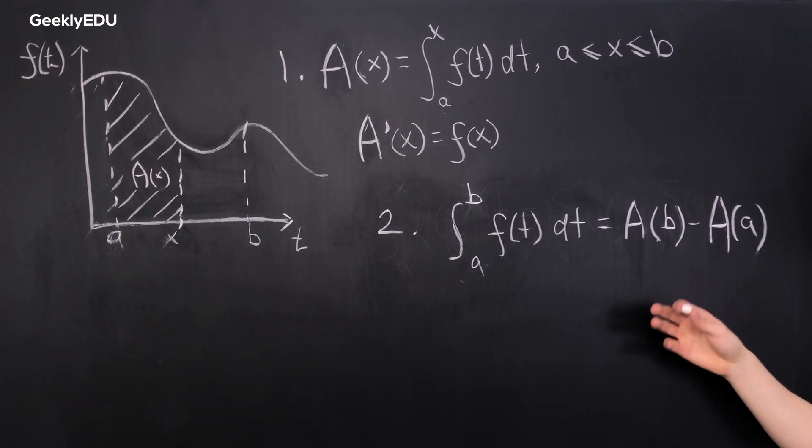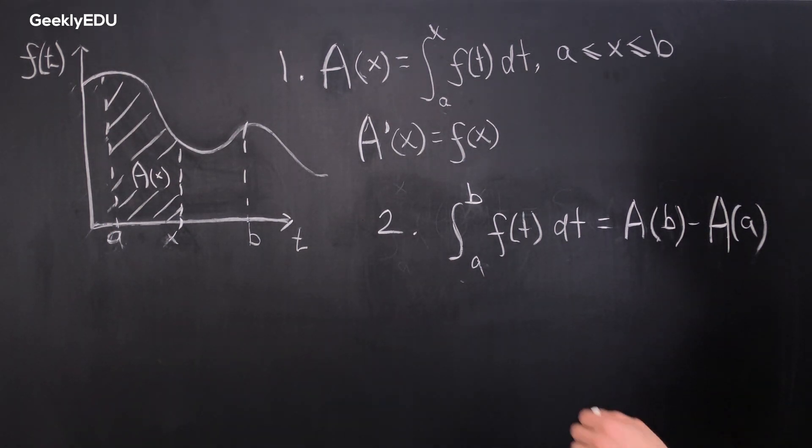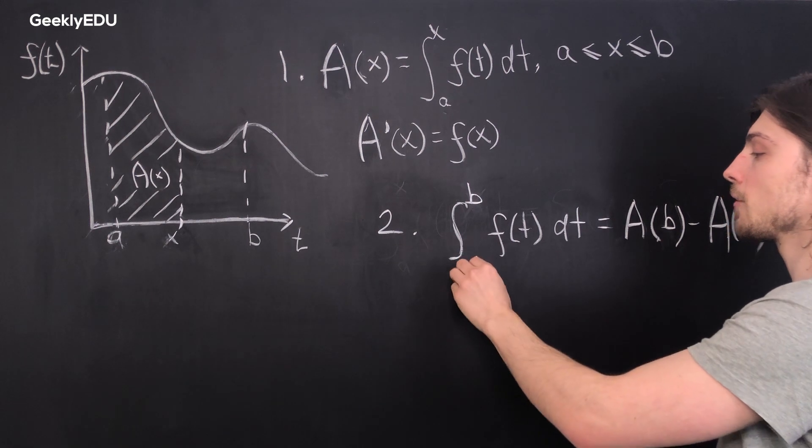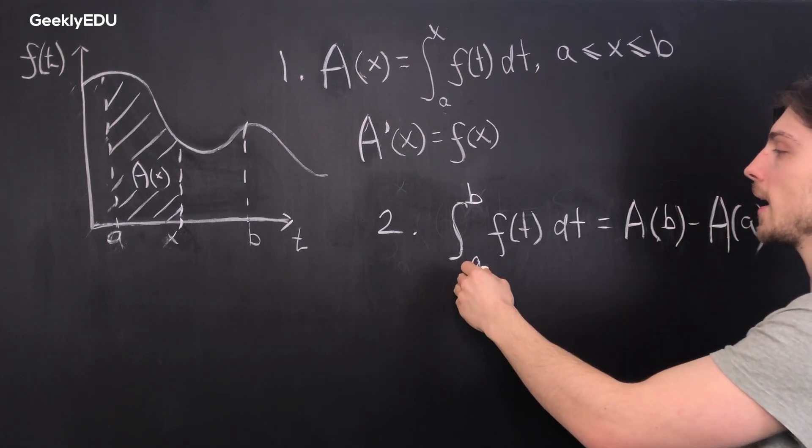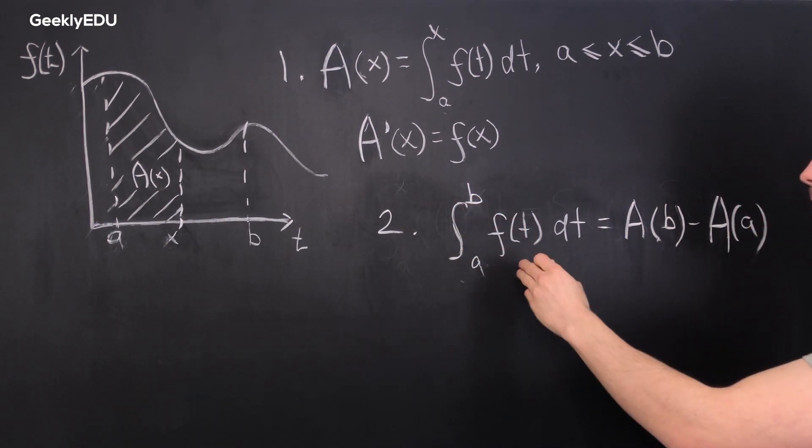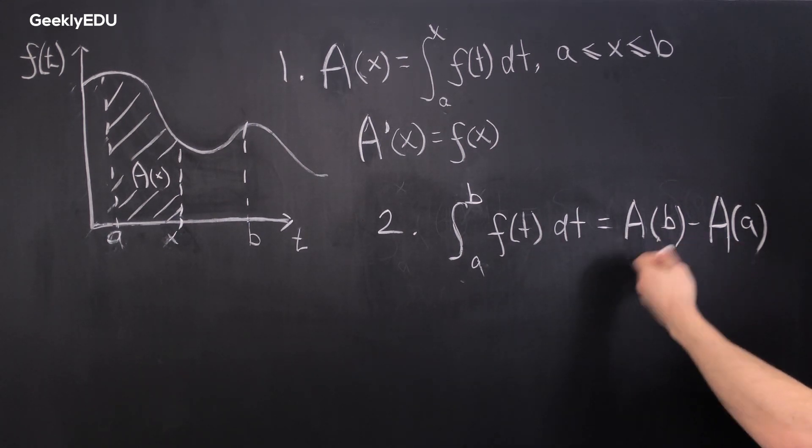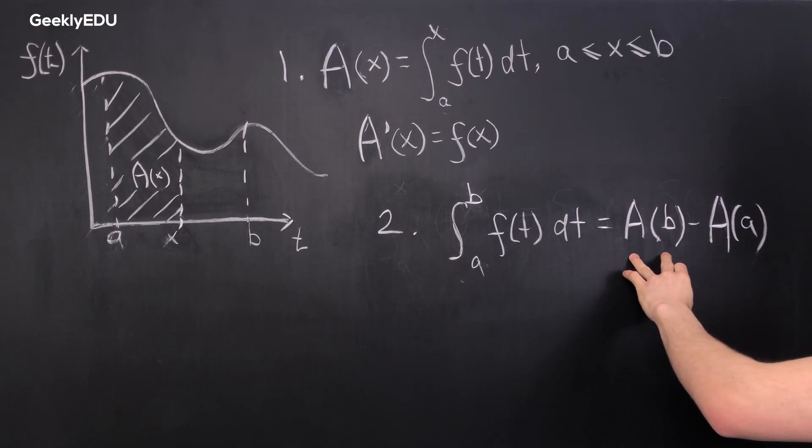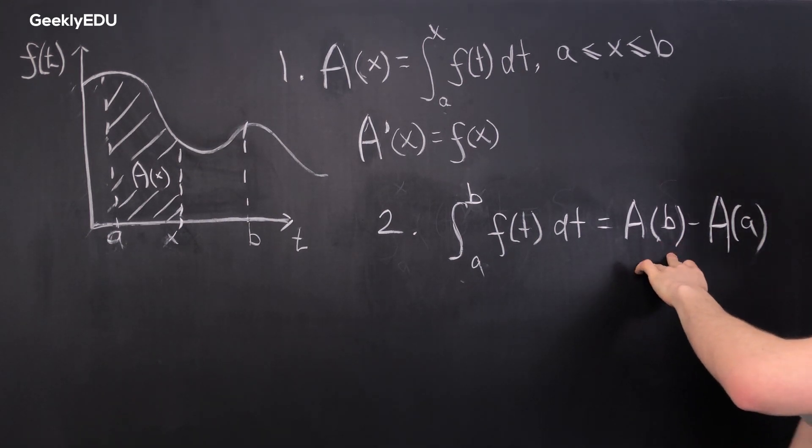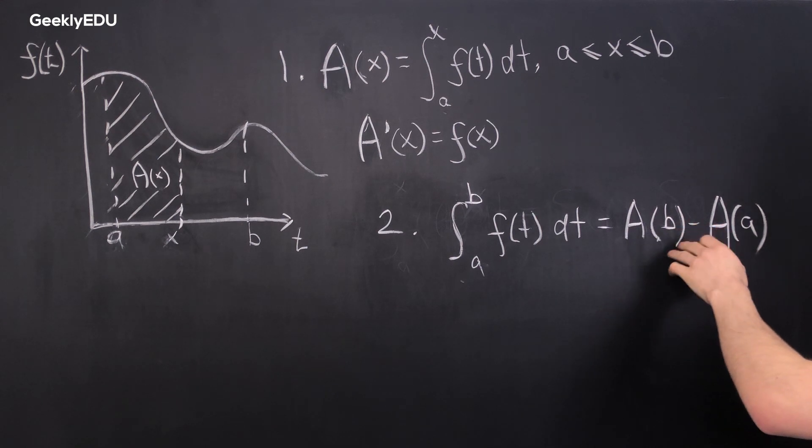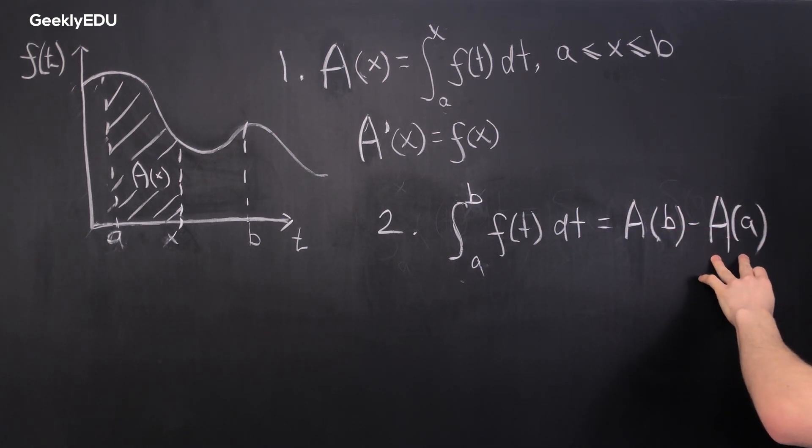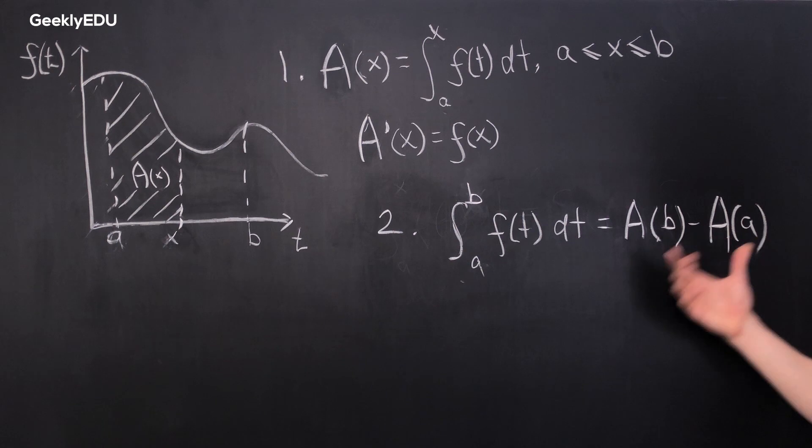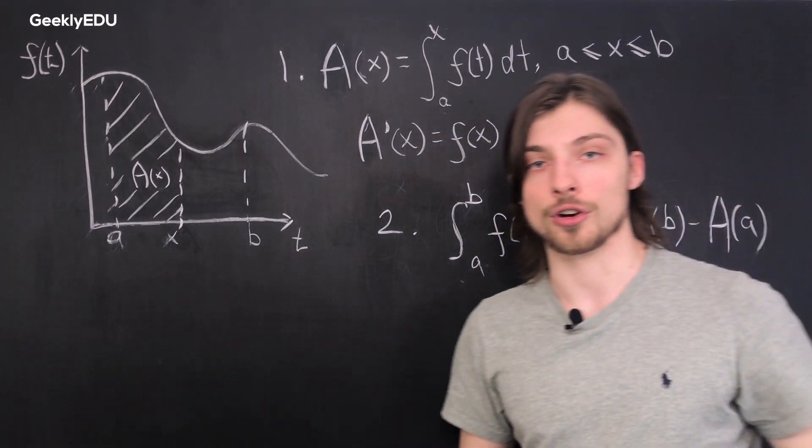In this equation here of the second fundamental theorem, that the definite integral from some lower bound a to some upper bound b of a function f(t) is essentially the anti-derivative of that function calculated with respect to b, and then from that we subtract the anti-derivative calculated with respect to a, and we get our area under the curve.